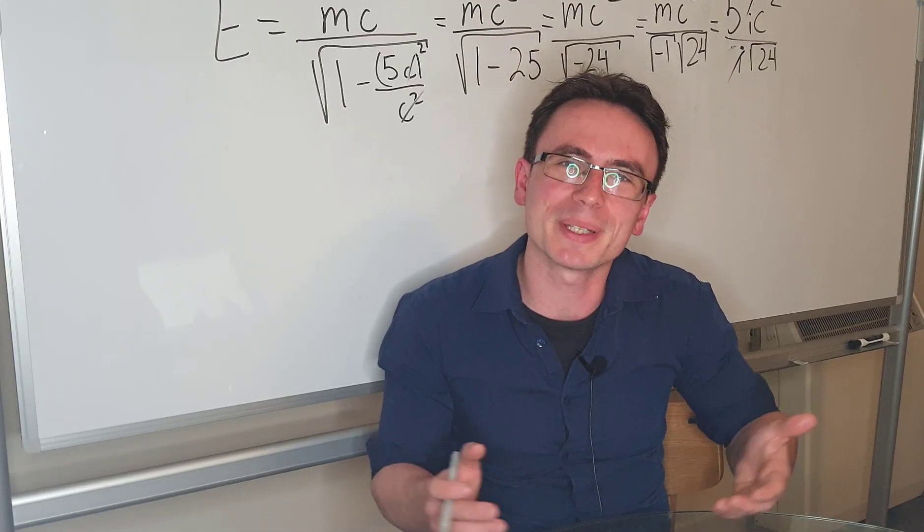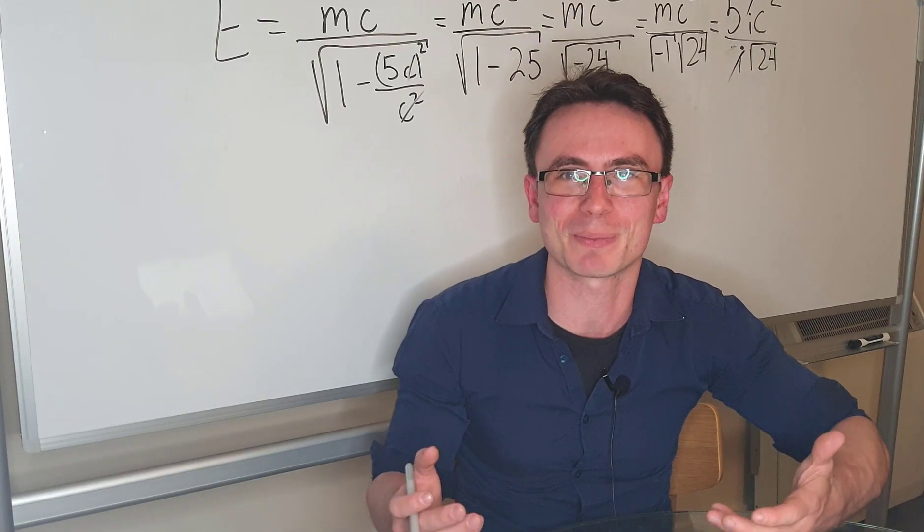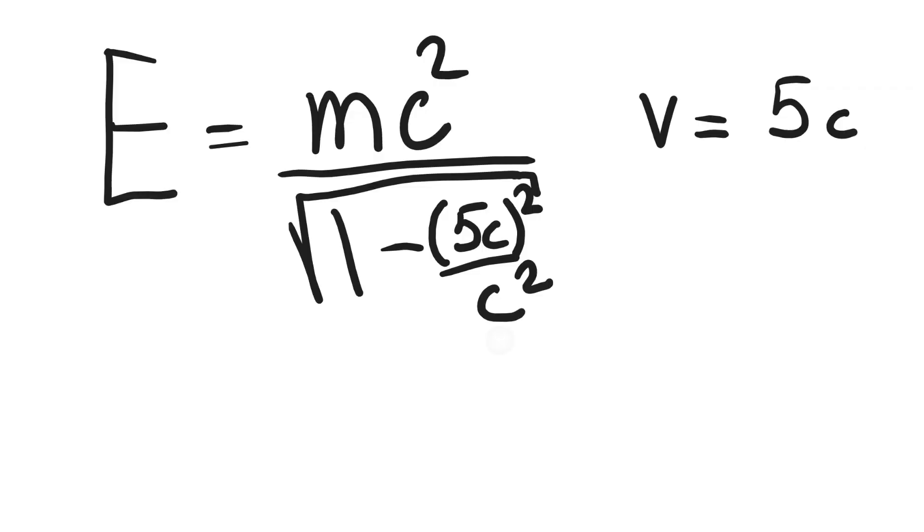Something really interesting happens if the speed is greater than the speed of light. For instance if v equals 5c, we're going to get mc² divided by the square root of one minus 5c² divided by c².